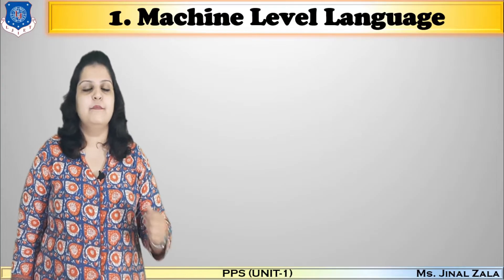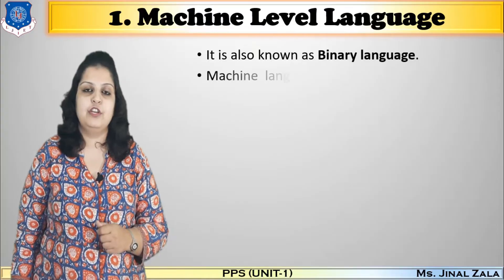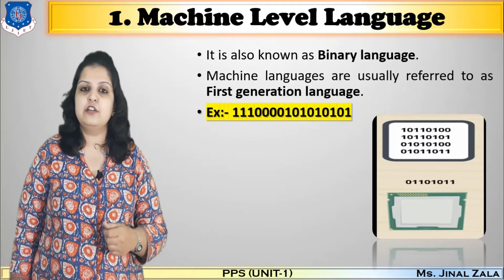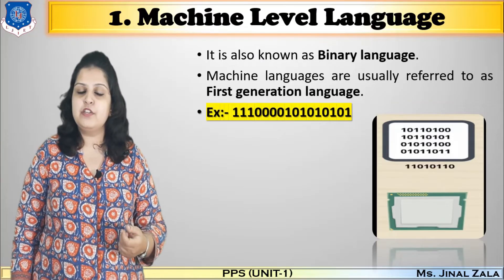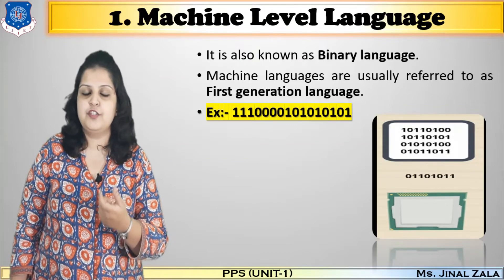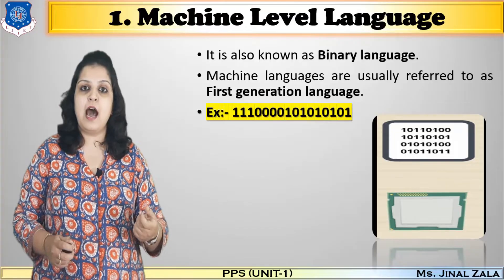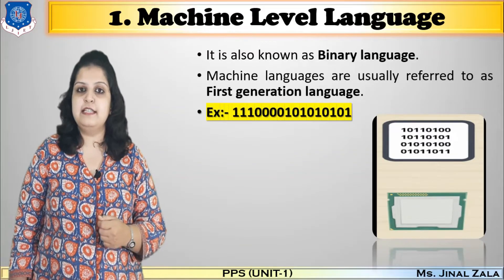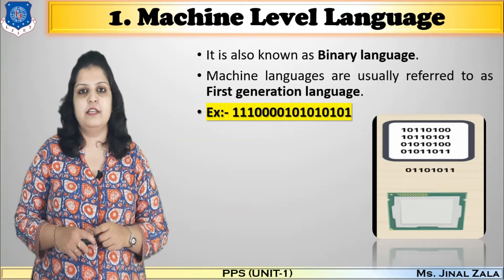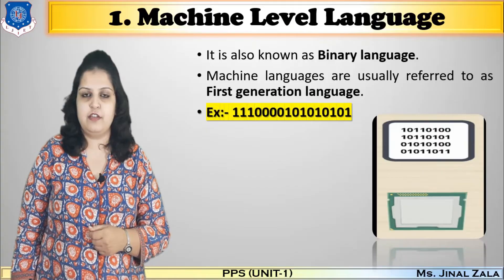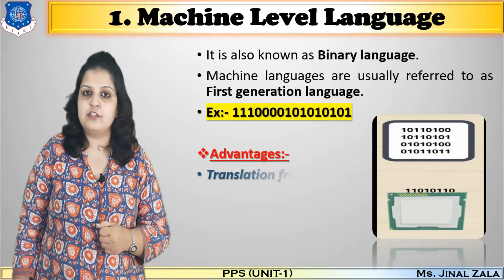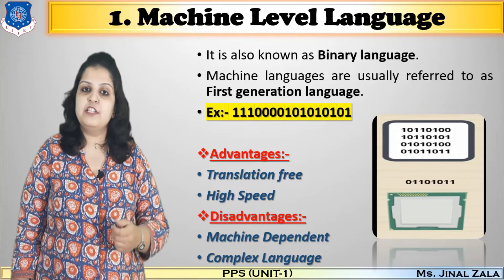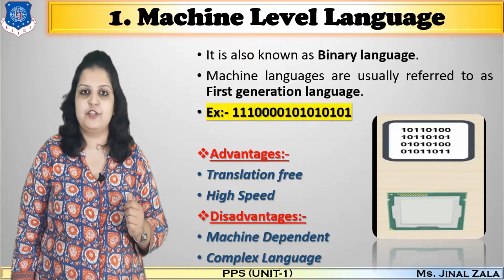Machine means our computer, and a computer can understand only one language — binary language. Binary language is the combination of zeros and ones only. This combination of zeros and ones represents one instruction, and the set of instructions is directly run on our CPU in machine-level language. This language was created very first among all other languages, that's why it is also called a first-generation language.